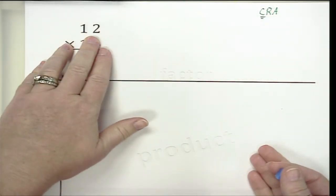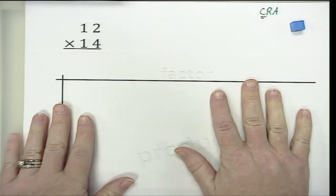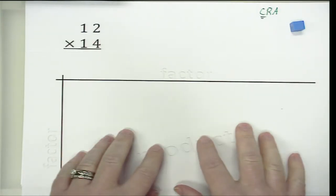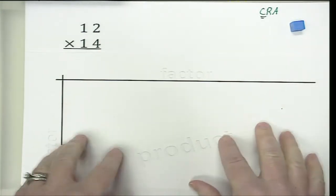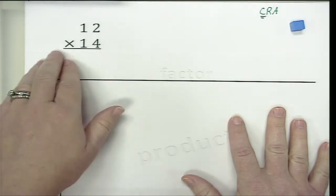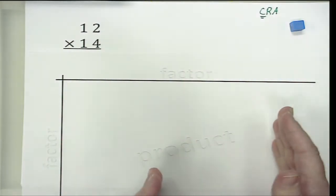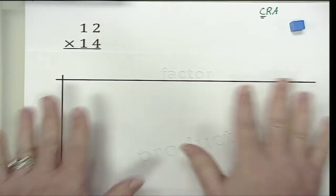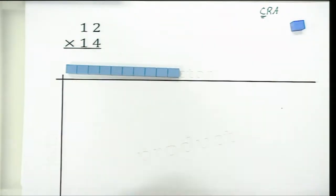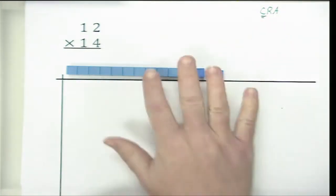So first I am going to look at my first number, which is twelve, and I am going to set it up. Now here I have a nice organizer where you can see one factor up at the top, factor on the side, and I am going to be creating my product in the middle. You don't need to have this organizer — this can be a scaffold, something that you have for students that you then take away. Because what we want is for students, if they get stuck and are not in the abstract yet, they can easily draw this to solve the problem. So I am going to model twelve by placing my one ten and my two ones right at the top of my first factor.